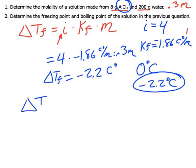Now the boiling point, pretty much the same formula. Delta Tb equals i times Kb times M. i is, once again, just going to be 4.